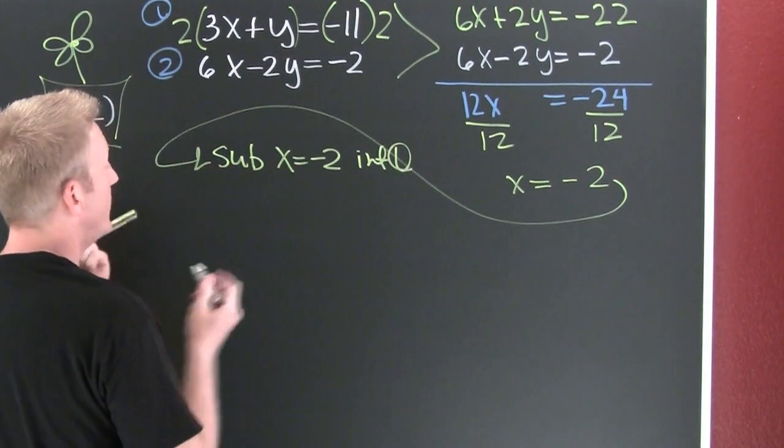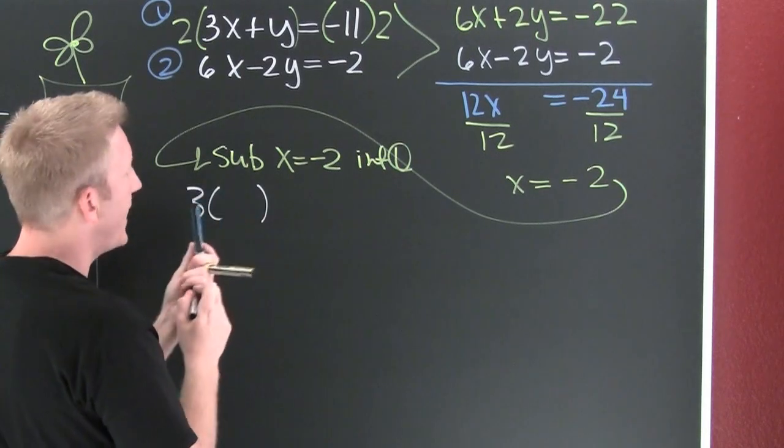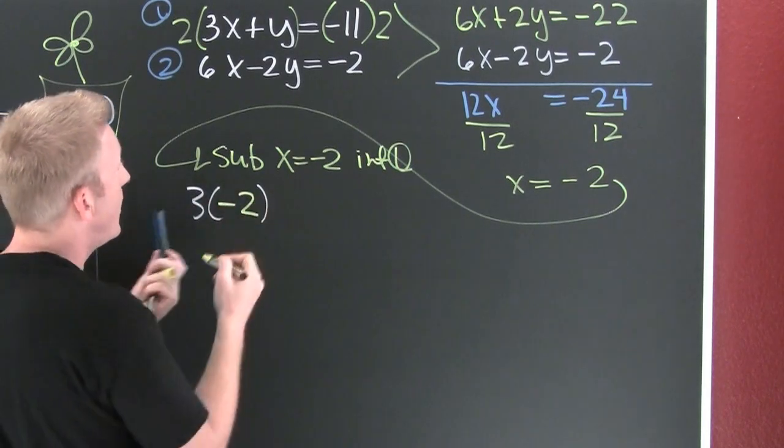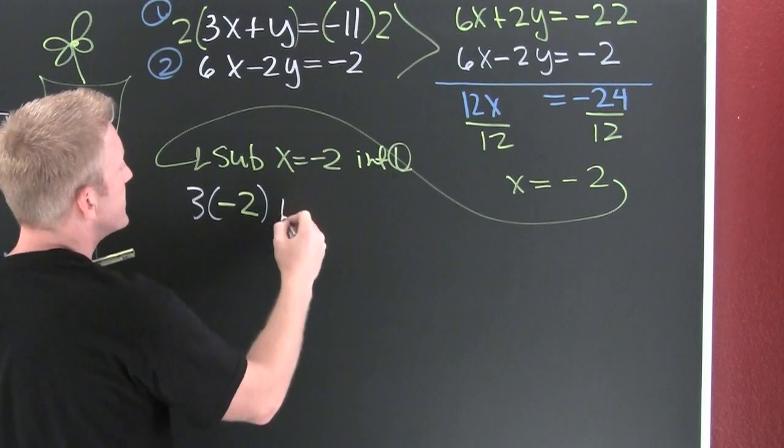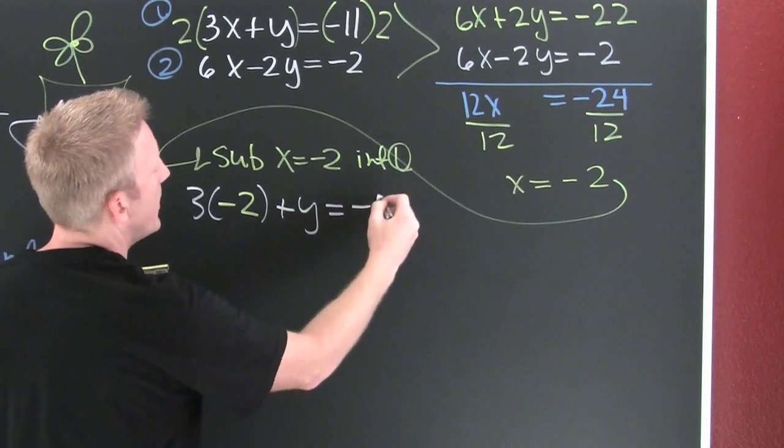So that says in one, three times, everywhere I see an x, I put a minus 2 plus y is a minus 11.